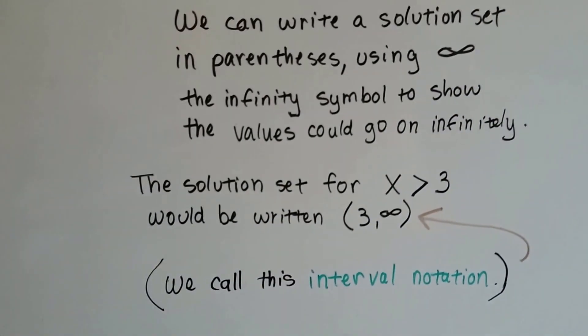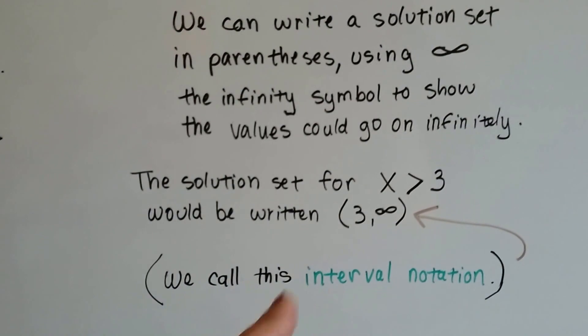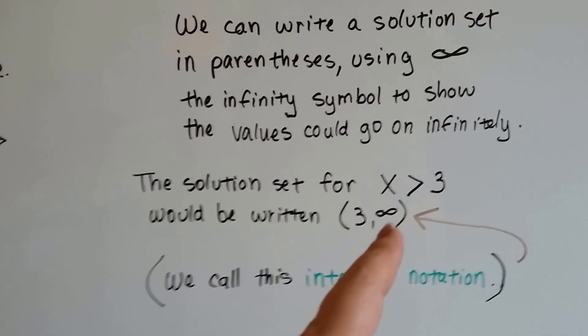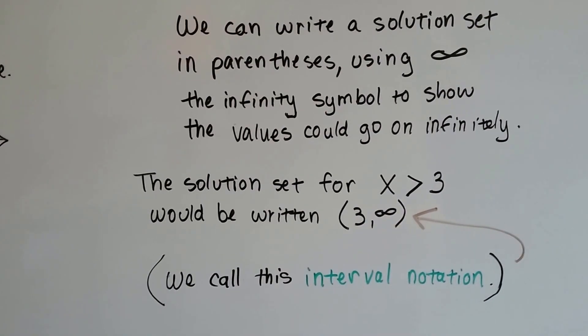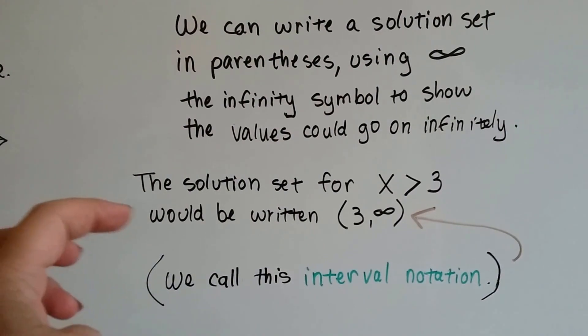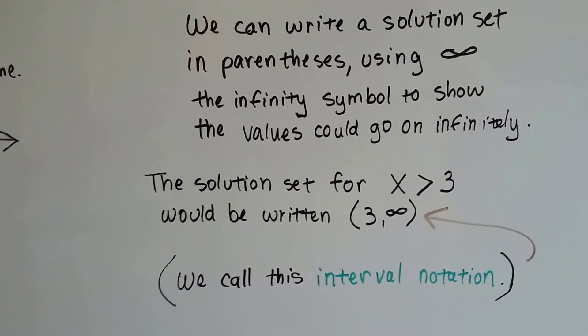The solution set for X is greater than 3 would be written as a 3, comma, and then an infinity symbol. We call this interval notation when we put it in the parentheses like this.